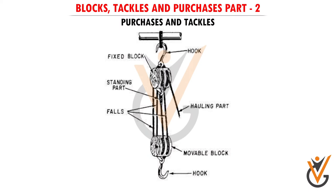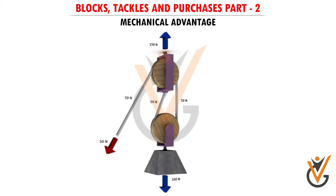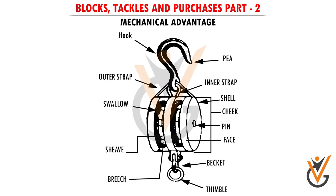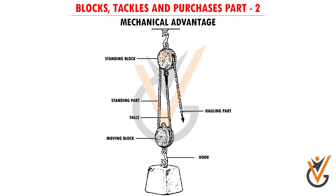Parts of a tackle: the blocks of a tackle are termed the standing block and moving block, and the rope rove through them is called the fall, which has its standing, running, and hauling parts. Mechanical advantage is the amount by which the pull on the hauling part is multiplied by the tackle. If friction is disregarded, this equals the number of parts of the fall at the moving block. For example, with two parts at the moving block, the mechanical advantage is two — a pull of 50 kilograms would hold a weight of 100 kilograms. In actual practice, friction does reduce the mechanical advantage considerably.